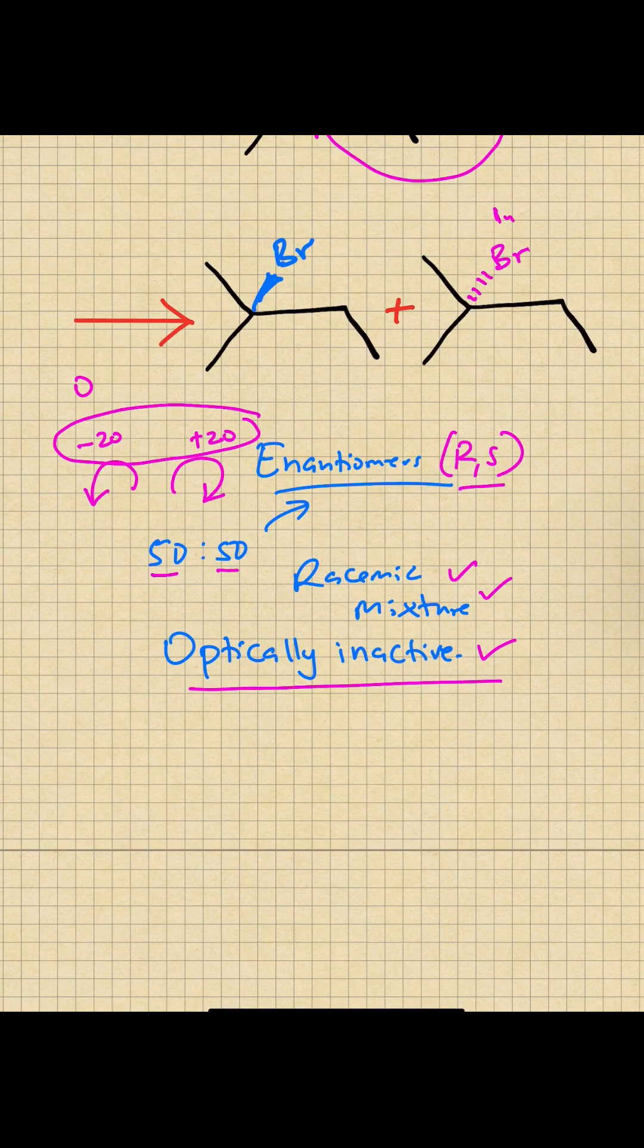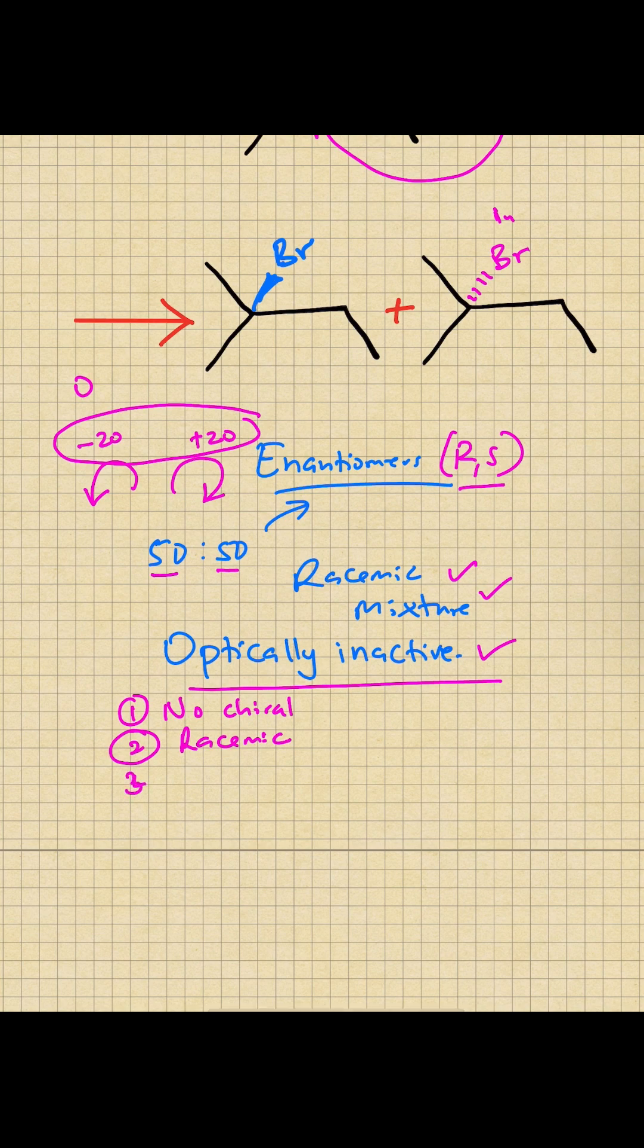And just while we're still here, I want to mention three situations where compounds could be optically inactive. One, no chiral center. Number two, racemic mixture like the one we just saw. And then number three, meso compounds. Meso compounds have chiral centers, have like at least two chiral centers, but they also have a plane of symmetry.